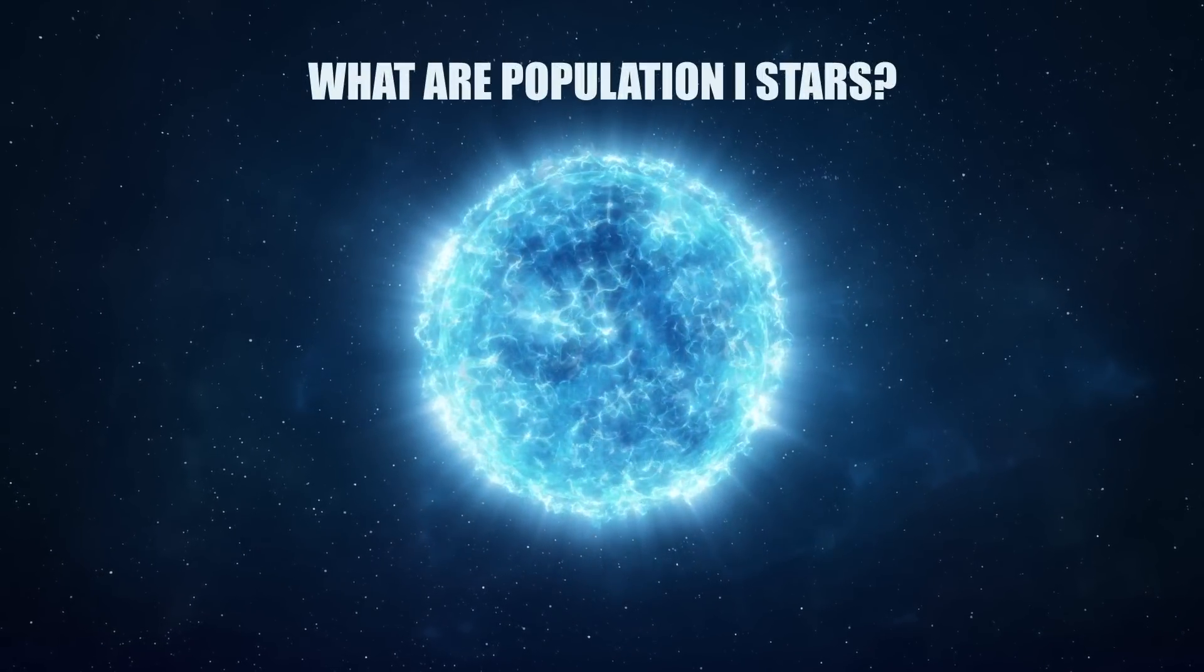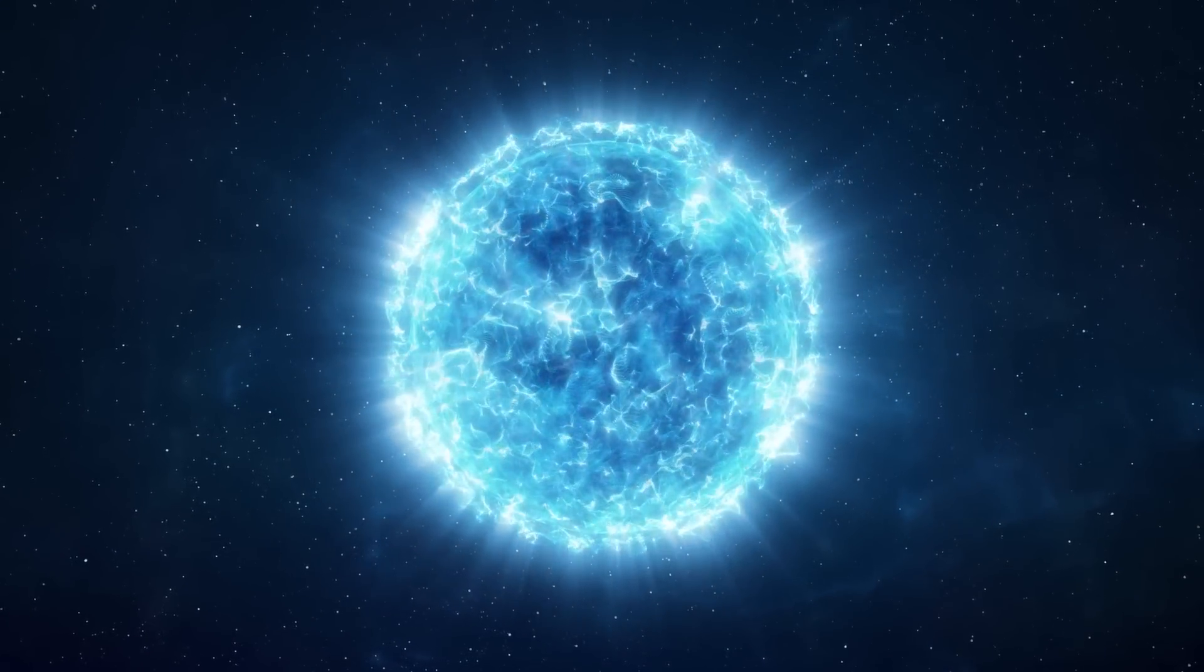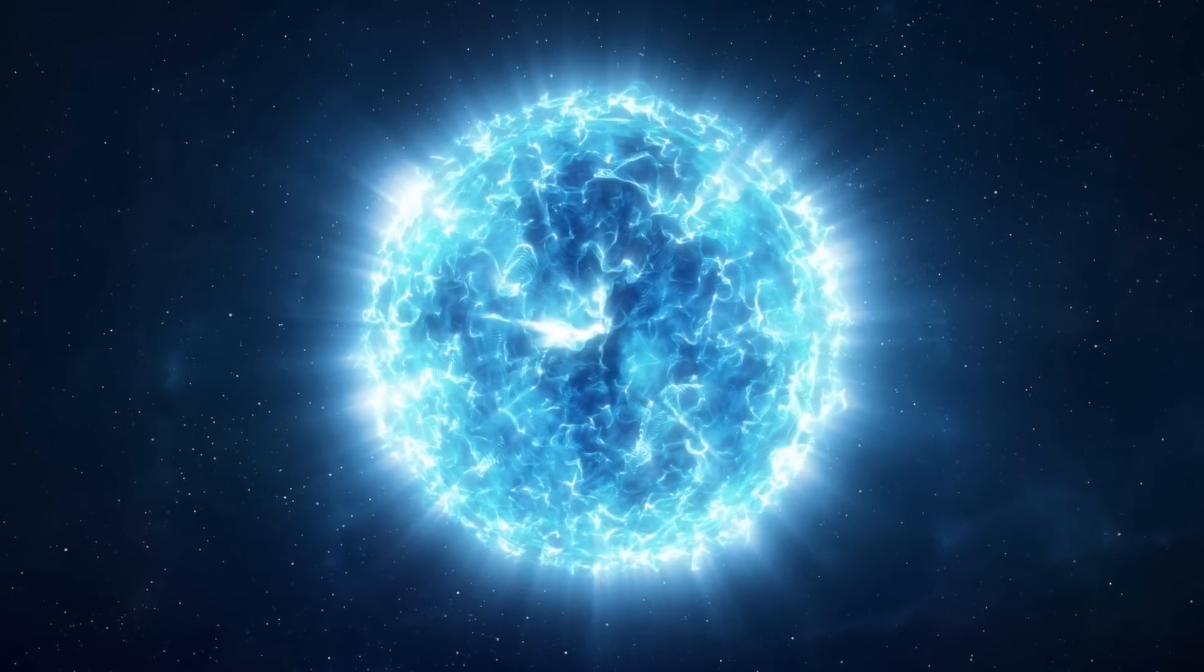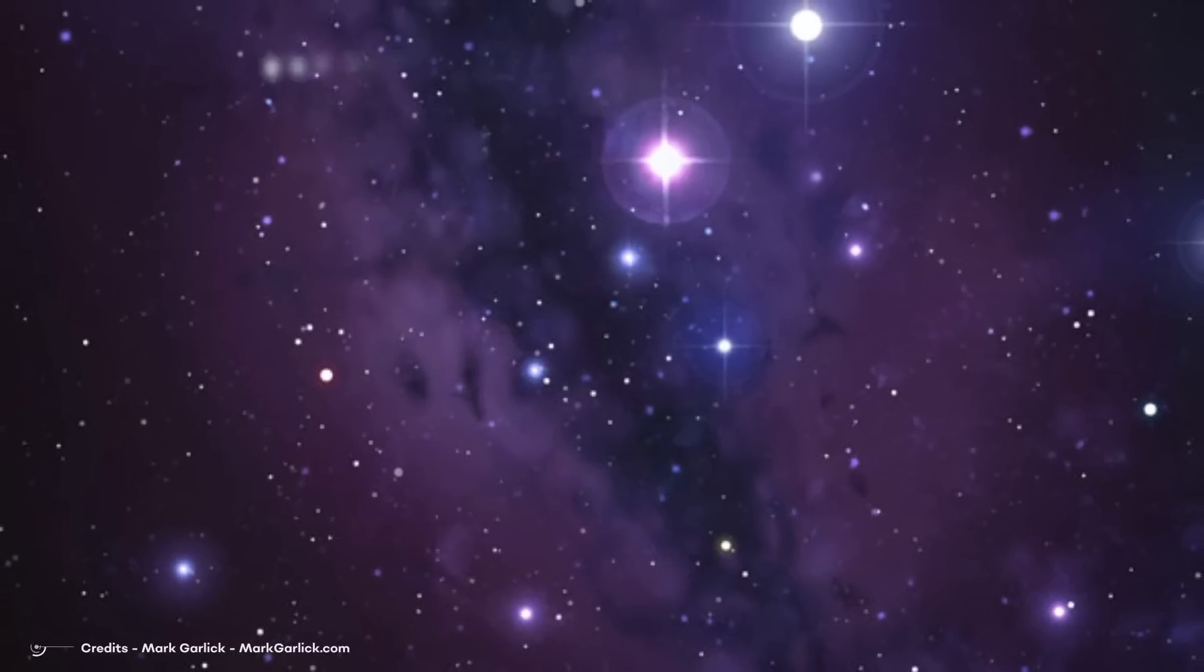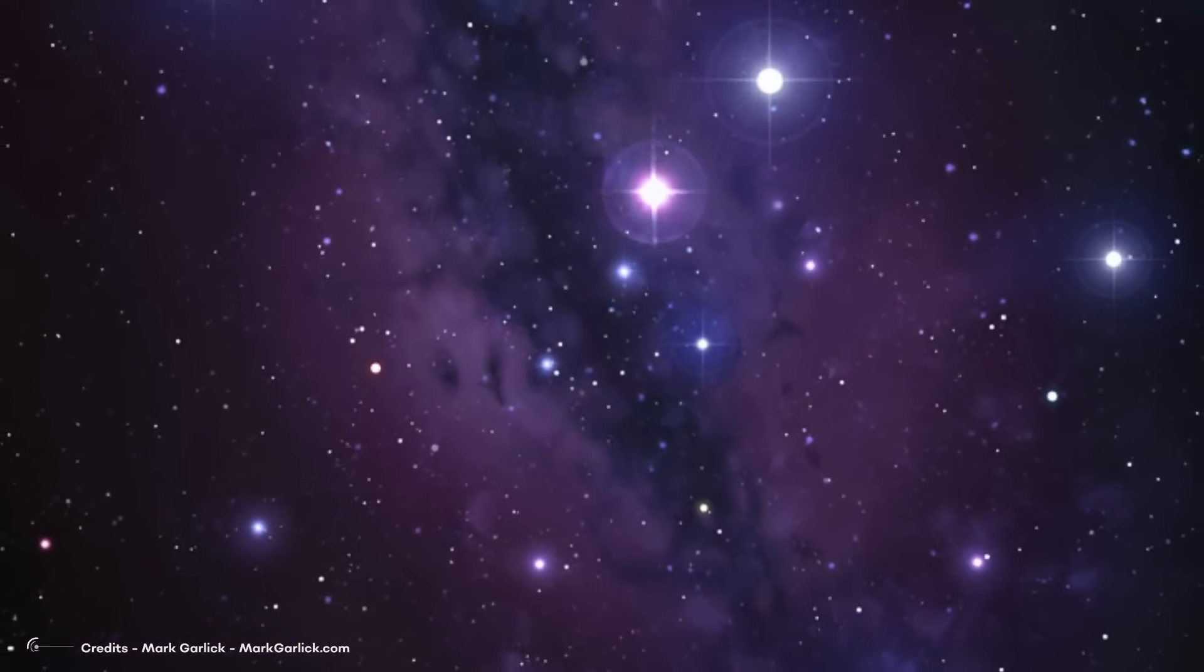What are Population I stars? Population I is made up of the younger stars, clusters and associations, believed to have formed between one million and one billion years ago. These stars are often hot, blue, white, O and B-type stars and are called extreme Population I objects.